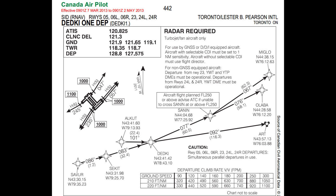In Toronto, it's a little different — mostly for noise abatement reasons, but also to assist the departure controller in spacing aircraft. You will actually get a vector before you're able to turn to your first waypoint of your departure SID.